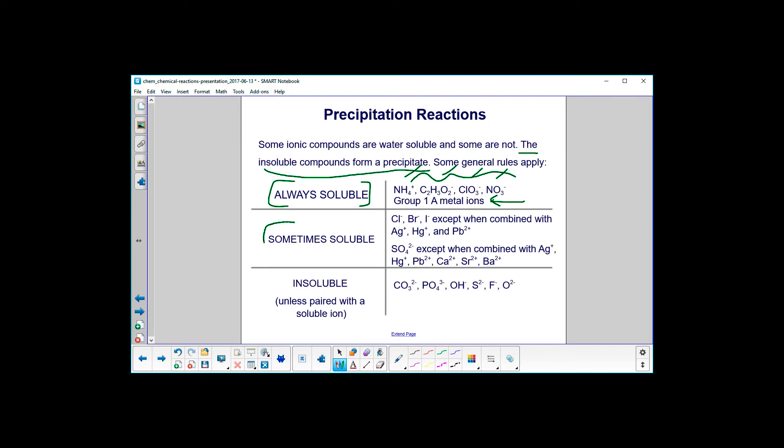Sometimes soluble. Sometimes they are, sometimes they're not. Chlorine, bromine, iodine, except when combined with silver, mercury, and lead. And notice these are all ions.